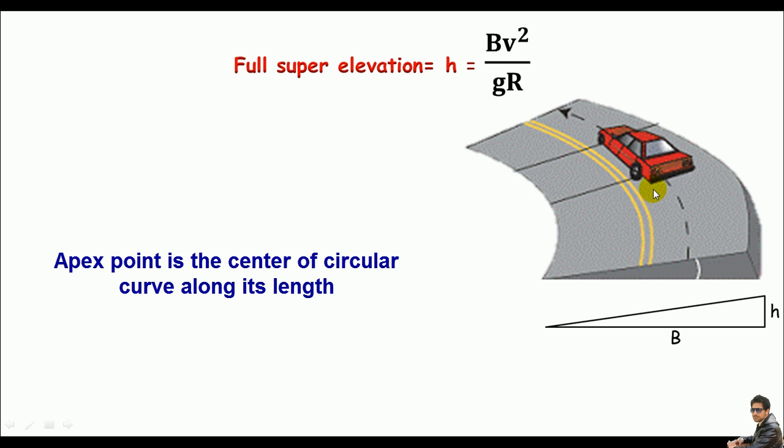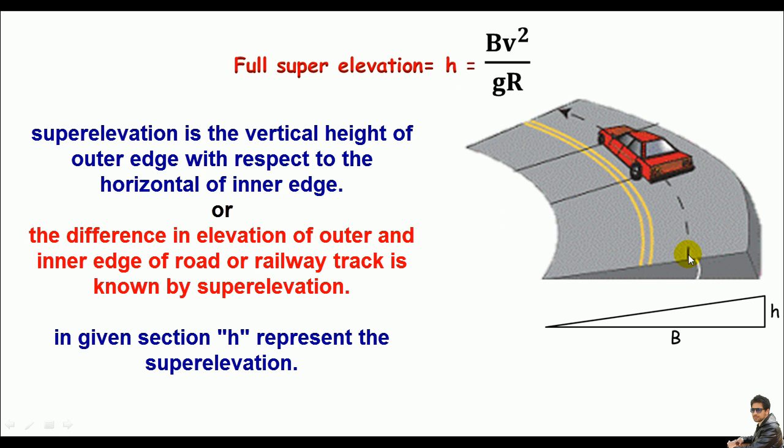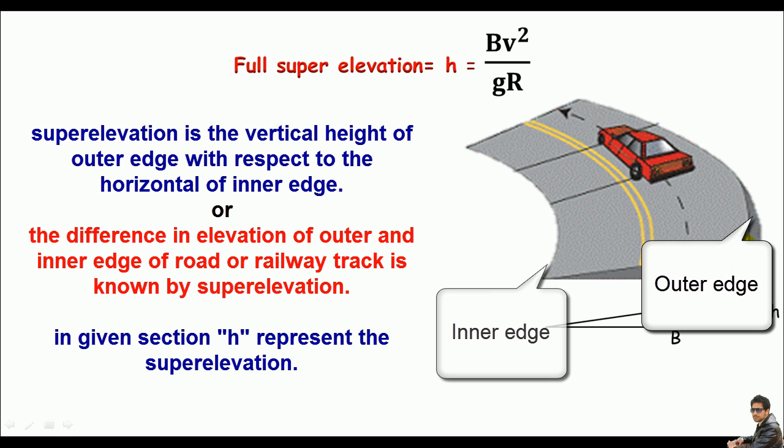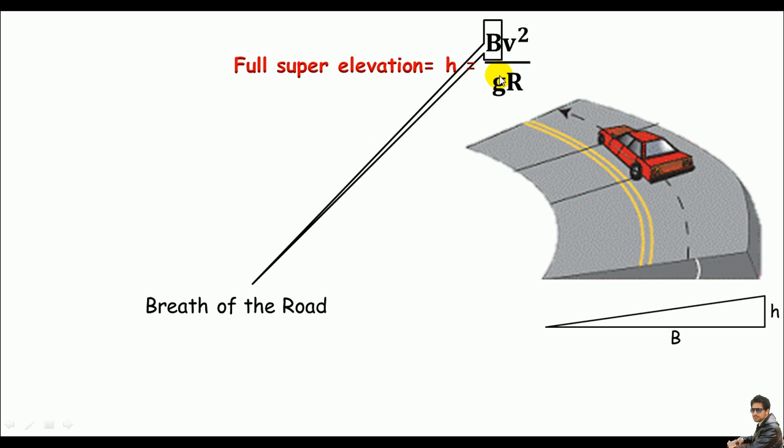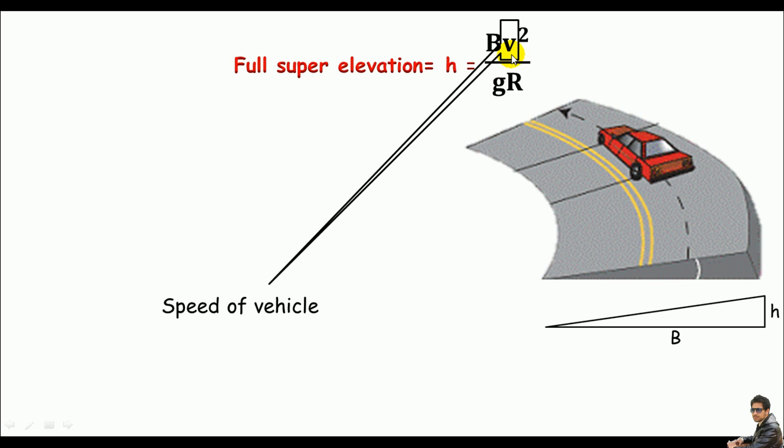the super elevation at the apex point of a curve. Remember, super elevation is just the difference in elevation of outer and inner edges. In this formula, B represents the breadth of the road, v is the speed of the